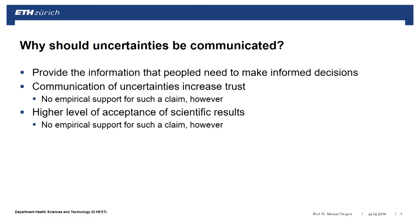So the question is: why should we communicate uncertainties? From a normative point of view, you should provide all information that may be important to people — that's a normative question and requires no empirical research. But you may also say that people make different decisions if they have information about uncertainties. That's an empirical question, and there are not too many papers that have really looked at this.